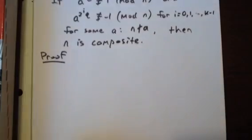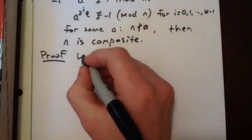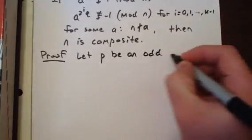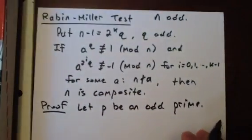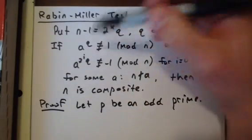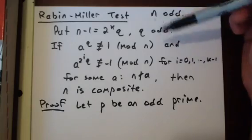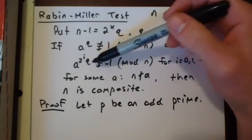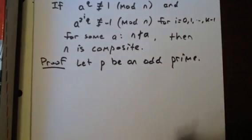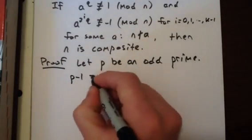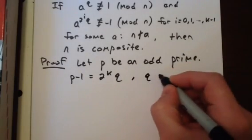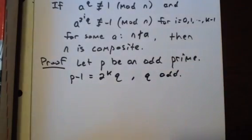And we will prove it by the contrapositive. So we're going to let p be an odd prime, and our goal will be to show that it fails one of these two conditions. So either a to the q is congruent to 1 mod n, or a to the 2i times q is congruent to negative 1 for some i in this range. So let's take p minus 1, factor out all the 2's, and multiply by the odd number.